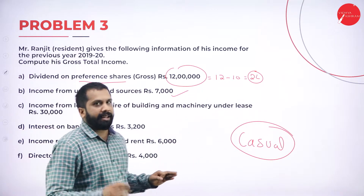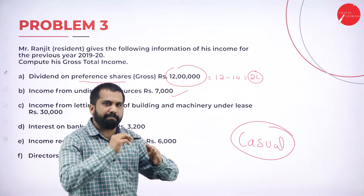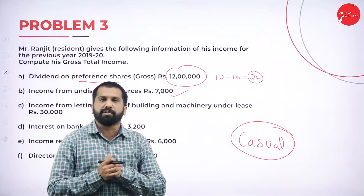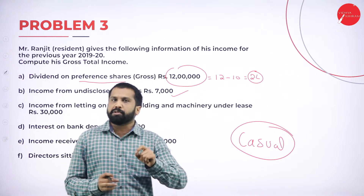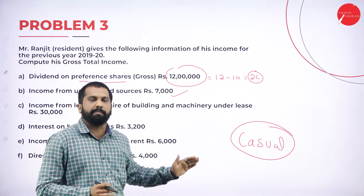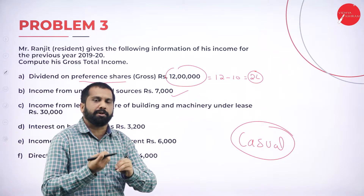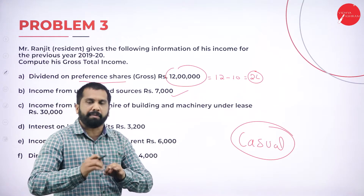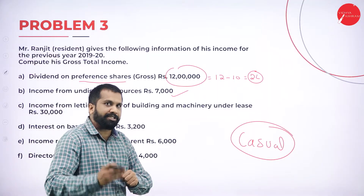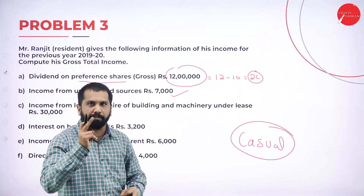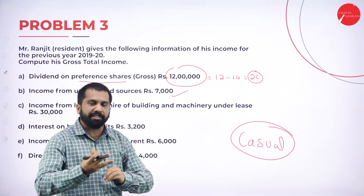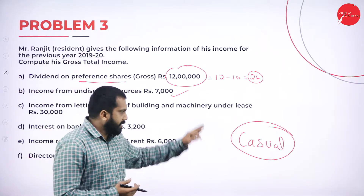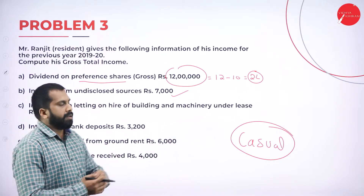While attending your tax class, please keep one book so that whatever important topics I mention, you write them down. It is helpful not only for your examination but also for your professional course. In a professional course, you cannot go and ask about small things like 'what is casual income' or 'what is the limit.' This BCom or BBA course is where you learn from scratch, and it will help you in post-graduation and other courses too.